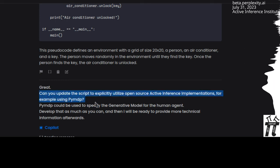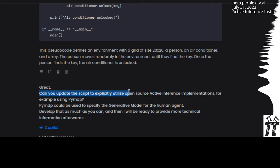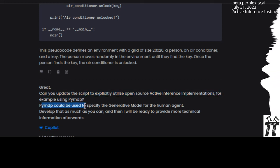Great. Can you update the script to explicitly utilize open source active inference implementations, for example, using PyMDP? PyMDP could be used to specify the generative model for the human agent. Develop that as much as you can, and then I will be ready to provide more technical information after.